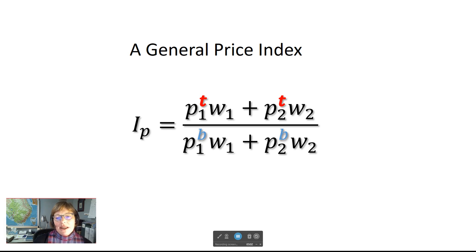The sum of those weighted prices is divided by a base period price set by the investigator, and those are weighted by w1 and w2. Different elements of this general price index can be determined a number of different ways.